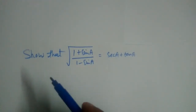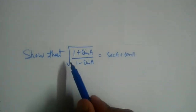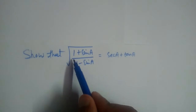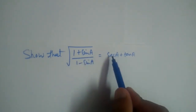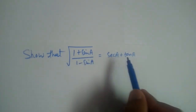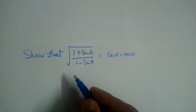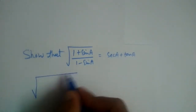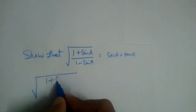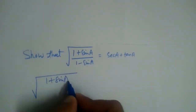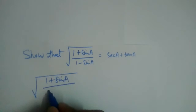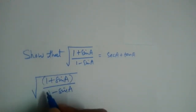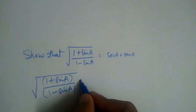Let us solve this problem: show that √((1 + sinA)/(1 - sinA)) is equal to secant plus tan. This is (1 + sinA) divided by (1 - sinA).